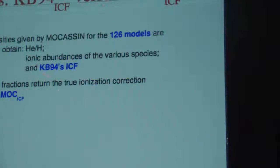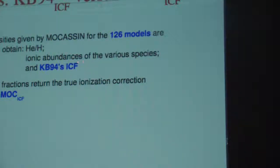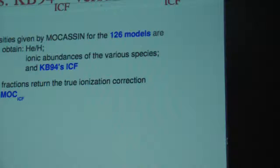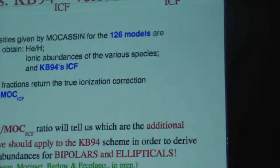Just to understand what I will show you now: we take line intensities from 120 models. From this we derive the ionic abundances of the various species, and then derive the true ICF values. On the other hand, we use the model ionic fractions to apply the ICF scheme and recover the abundances — using either optical only or optical plus UV — and we show the ratio between the two abundance sets.